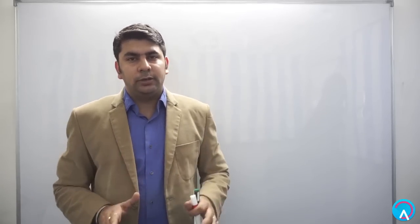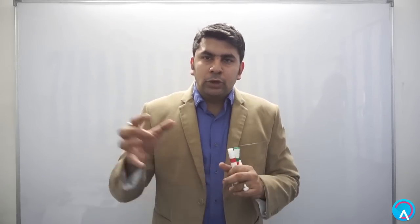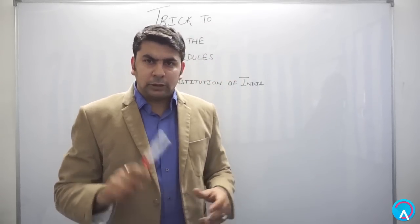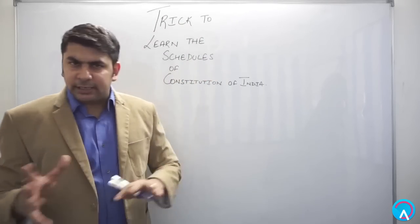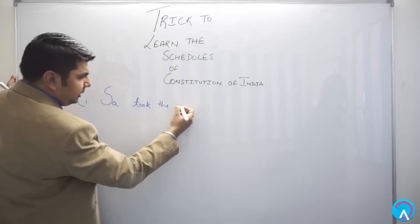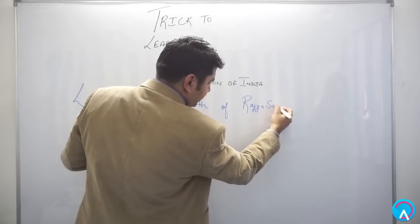The first trick to learn the first seven schedules out of twelve is basically about a person — a lady named Lisa. To do administration and have control of tribal areas, she will be taking the oath of a Rajya Sabha seat. You may be confused, but let's see what the punchline is: Lisa took the oath of Rajya Sabha to get the administration.